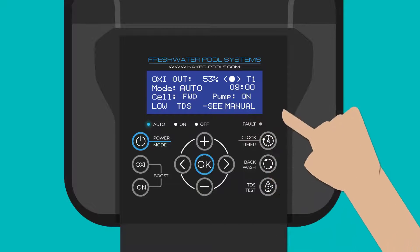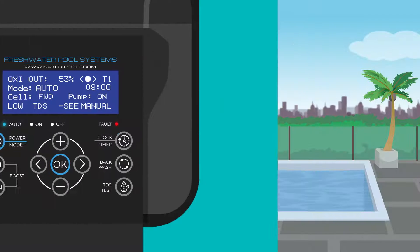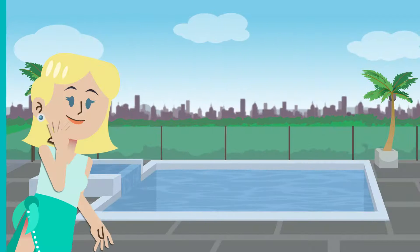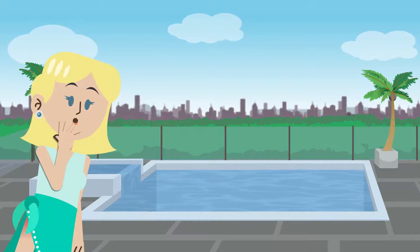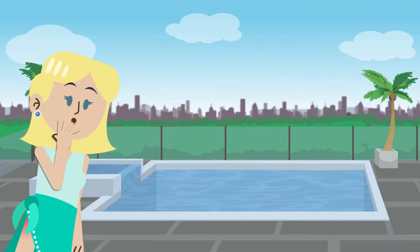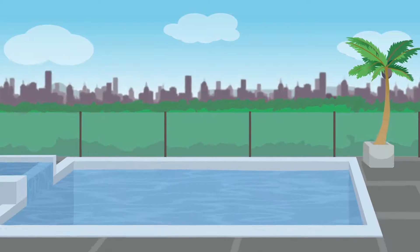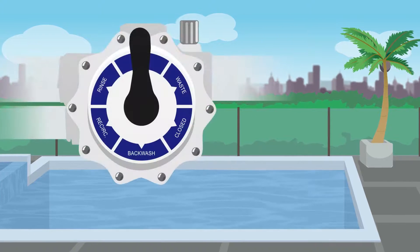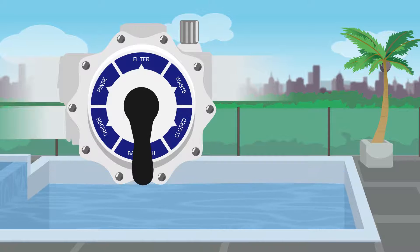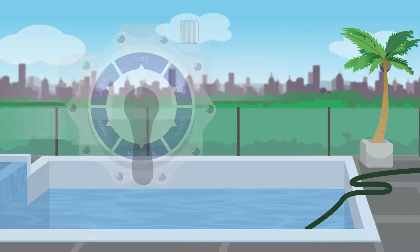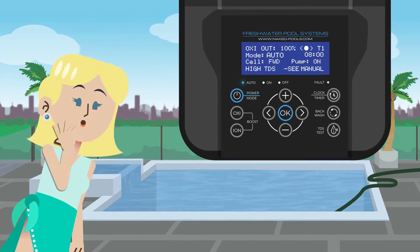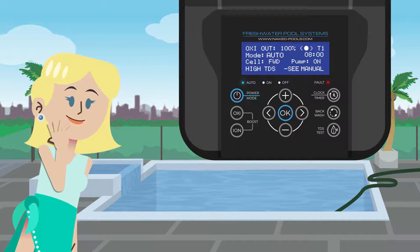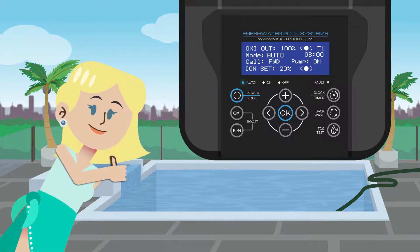But how do you fix unbalanced levels? For high TDS, this can be adjusted by diluting the pool water, but it's not critical. It can be done by constantly backwashing your pool and topping it back up with fresh water. Repeat this process until the unit is no longer displaying the high TDS message. Pretty straightforward.